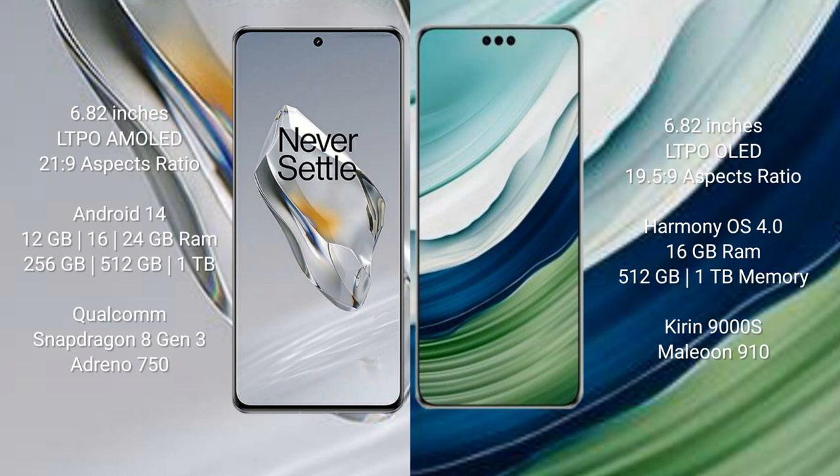OnePlus 12 comes with 12GB, 16GB, or 24GB RAM and 256GB, 512GB, or 1TB internal storage, powered by a Qualcomm Snapdragon 8 Gen 3 processor with Adreno 750 GPU. Huawei Mate 60 Pro Plus comes with 16GB RAM and 512GB or 1TB internal storage, powered by a Kirin 9000S processor with Maleoon 910 GPU.